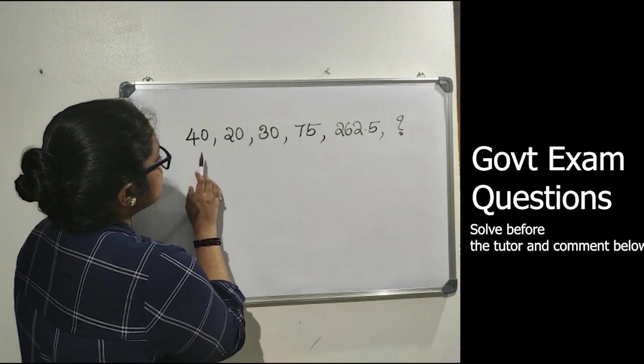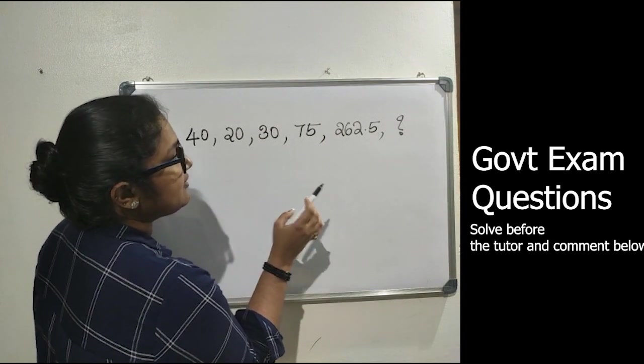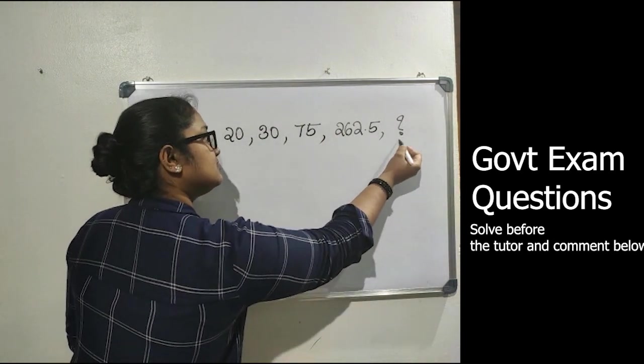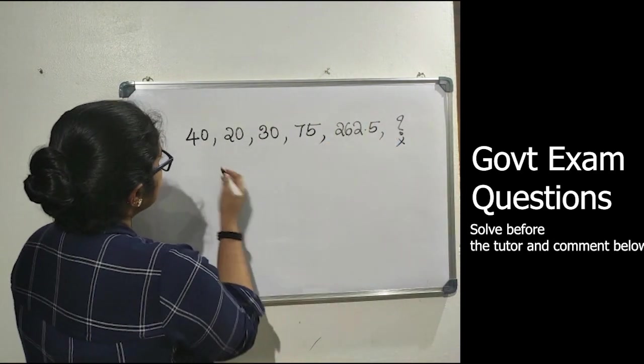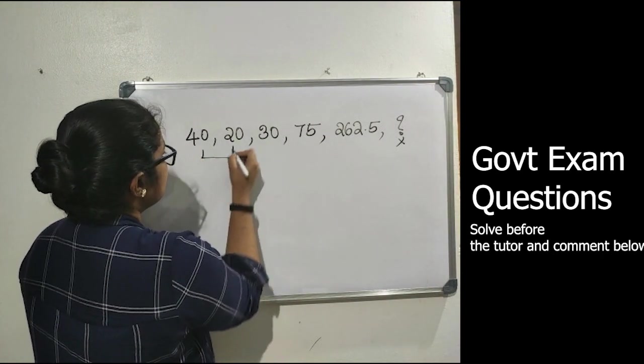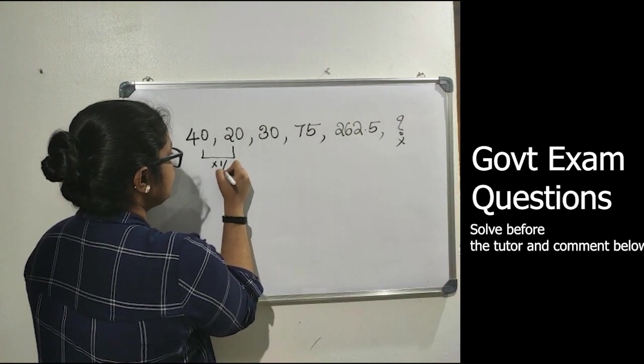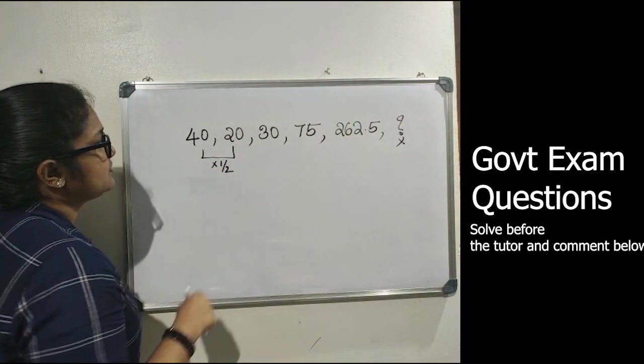The next question is 40, 20, 30, 75, 262.5, and the last number is unknown. Let us take it as x. So 20 is 40 divided by 2, so 40 into 1 by 2. Next, 20 and 30.